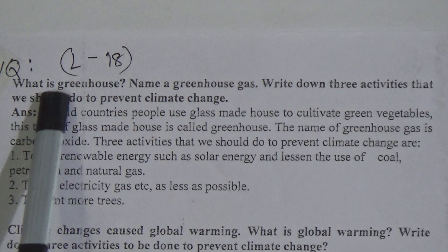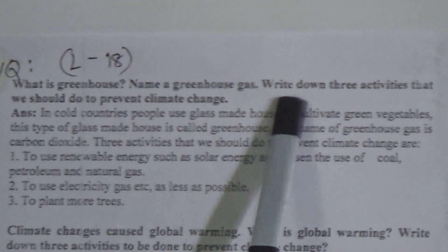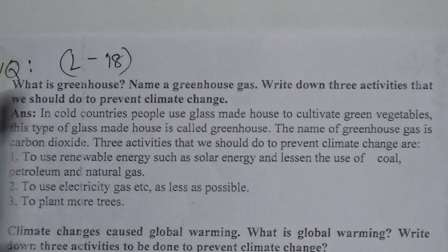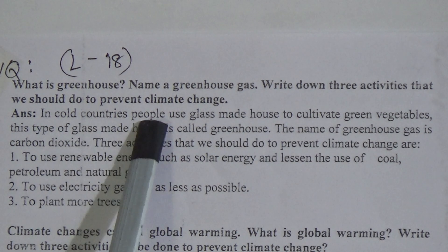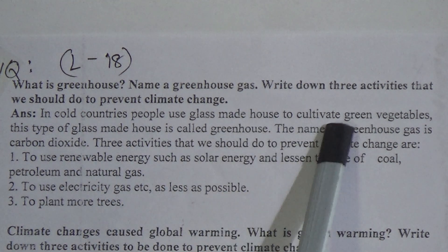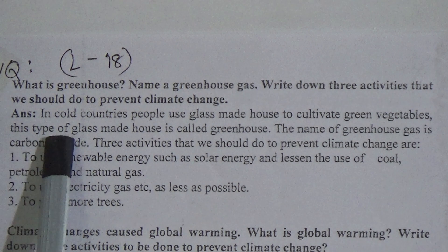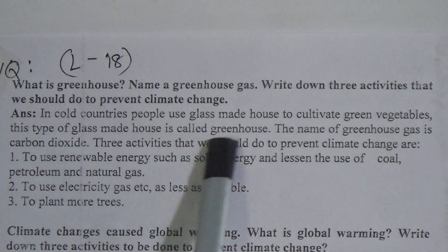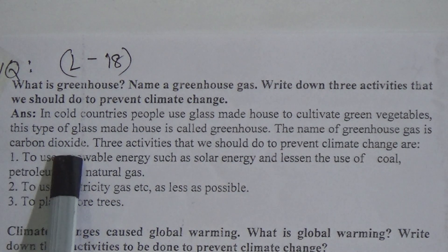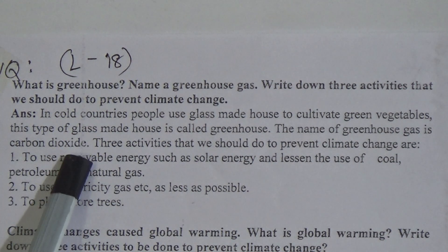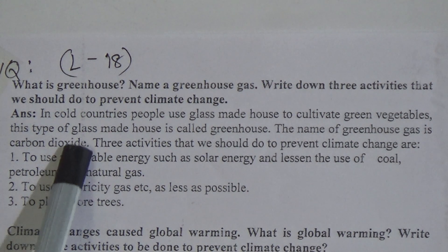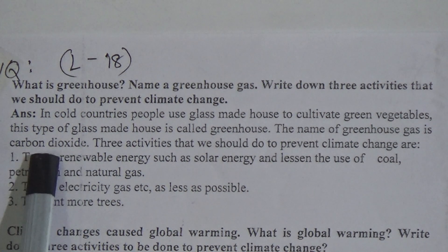The question is: What is greenhouse? Name a greenhouse gas. The answer is: in cold countries, people use glass-made houses to cultivate green vegetables. This type of glass-made house is called a greenhouse. The name of a greenhouse gas is carbon dioxide. In your book there are two greenhouse gases listed: carbon dioxide and water vapor — you can write any one.